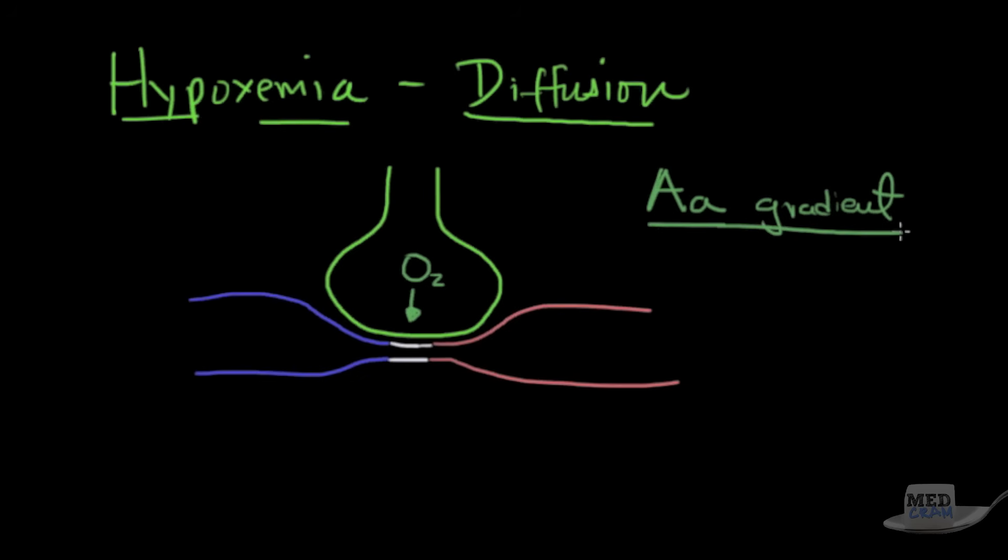So you guys know how a lung works. John West is quoted as saying the lungs are very easy to understand. Air goes in and out and blood goes round and round. Well, let's sort of break that down a little bit to understand it a little bit better.